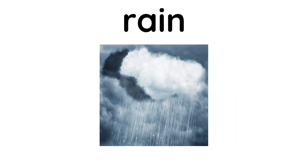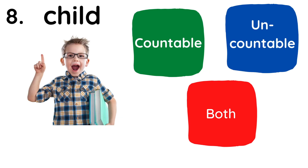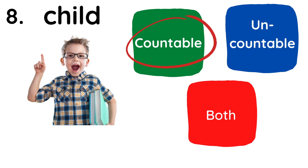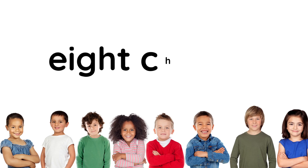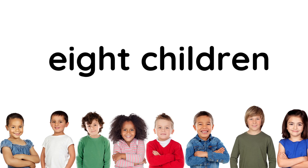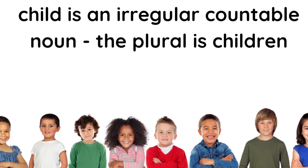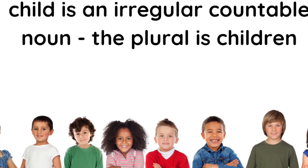Rain. Child. Countable. Eight children. Child is an irregular countable noun. The plural is children.